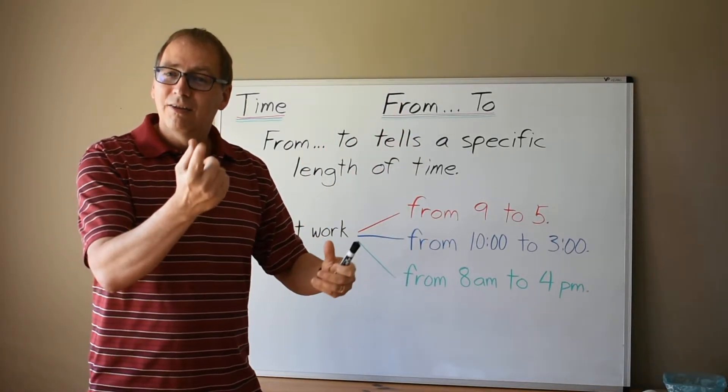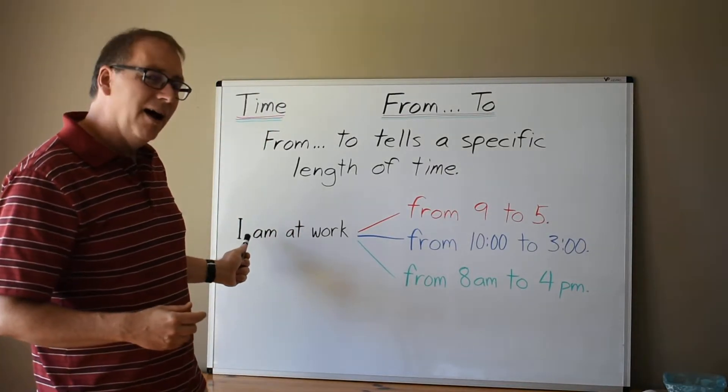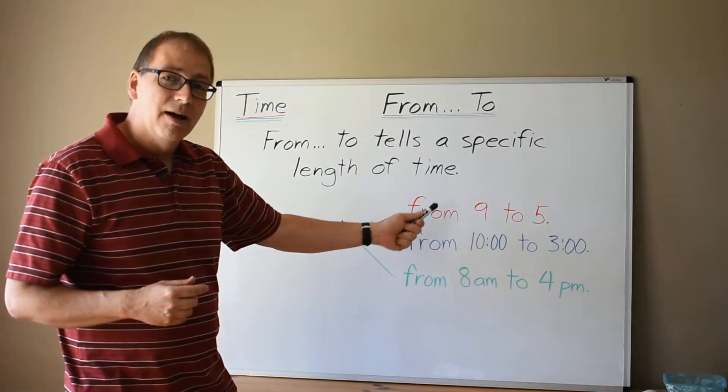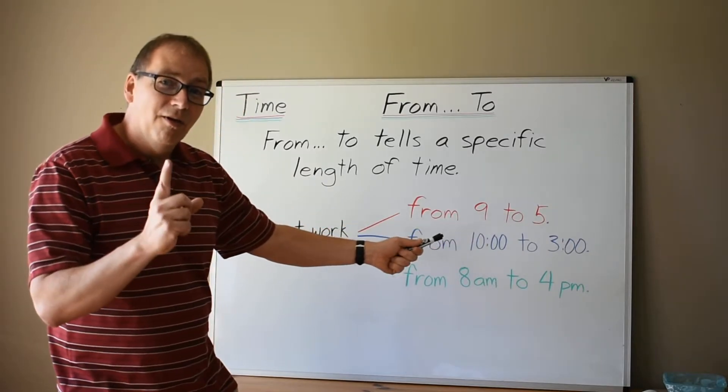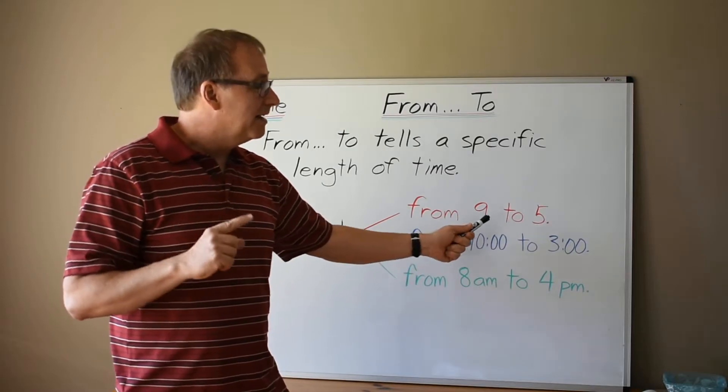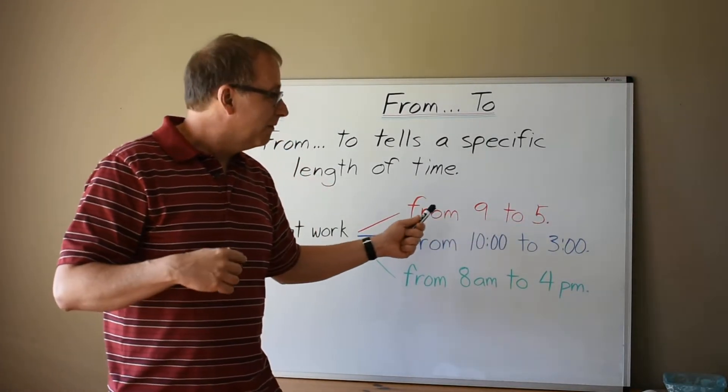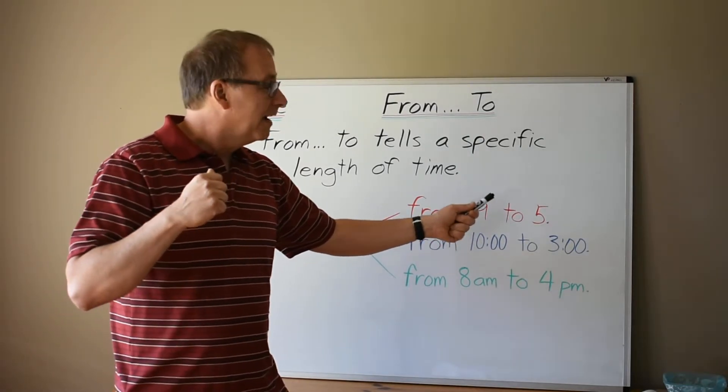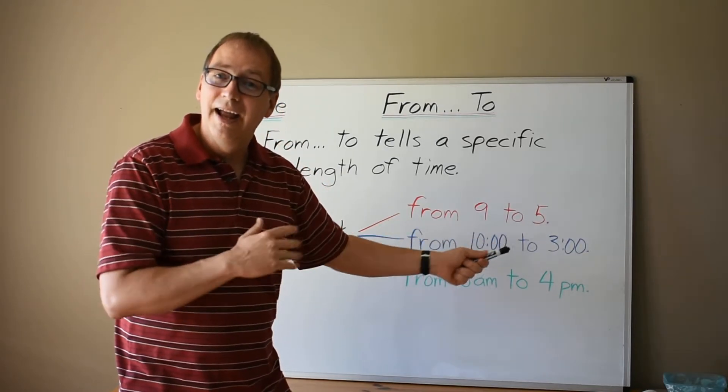Let's look at some examples. I am at work from nine to five. So I begin work at nine o'clock and I end work at five. From nine is when I start, to five. Five is when I end.